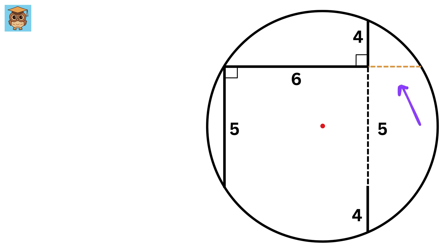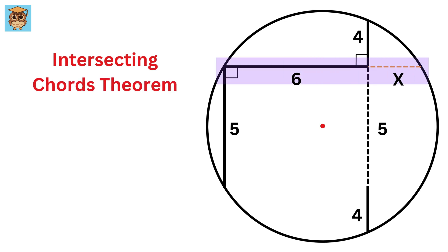Now draw this line and label it as x. We will use another theorem called the intersecting chords theorem. Here is one chord of the circle, and here is another chord of the circle. So by the intersecting chords theorem,